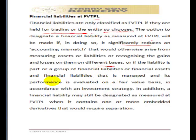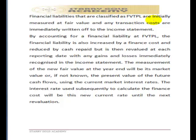A liability may also be designated as FVTPL if it is part of a group of financial assets and liabilities managed and evaluated on a fair value basis in accordance with an investment strategy, or if it contains embedded derivatives requiring separation. The major reason financial liabilities are usually classified as FVTPL is that they are held for trading. Such liabilities are initially measured at fair value, and any transaction costs are immediately expensed to the income statement.